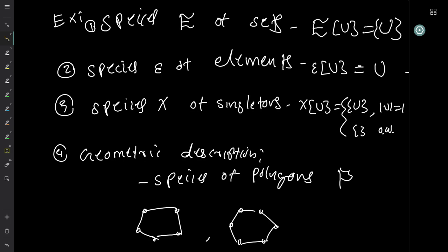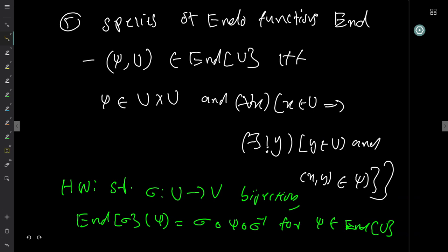I can define species by geometric descriptions. For example, species of polygons P: I define a set of five elements and put a structure to say this is a polygon on five elements, this is a polygon on six elements, etc. This geometric description tells you how to make polygons given any set, so it also defines a species.